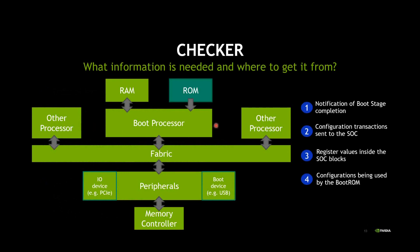Here is the diagram we saw earlier. There were four pieces of information the checker needed. First, notification of boot stage completion — obtained by monitoring the processor-RAM interface. Second, configuration transactions being sent into the SOC — from the boot processor fabric interface. Third, register values inside SOC blocks — using UVM RAL with access to cross-module references. Fourth, the configurations the boot ROM is currently using — from the configuration object.